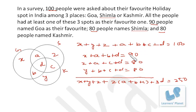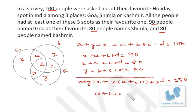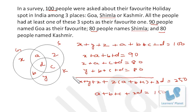Now we have two relations. Subtracting the total equation (which equals 100) from the sum of 250, we get: a + b + c + 2d = 150.